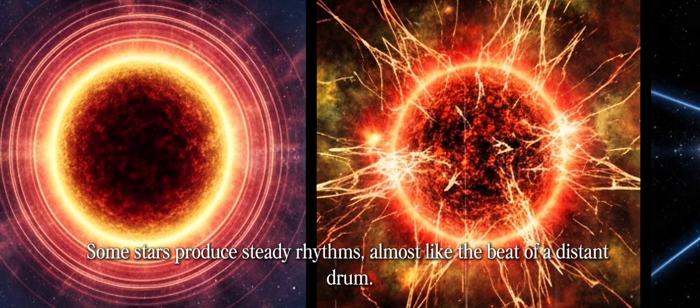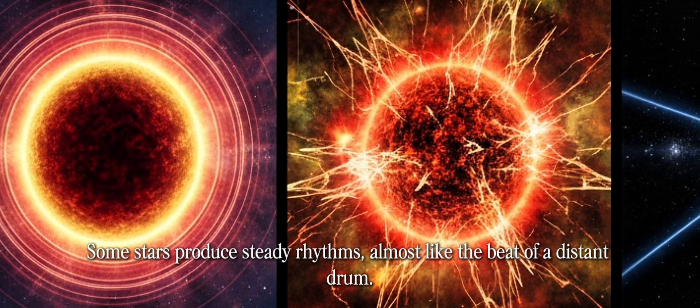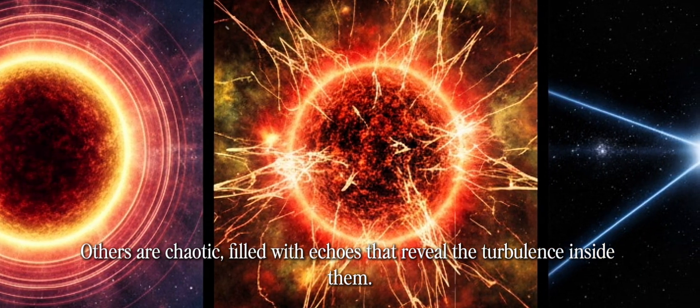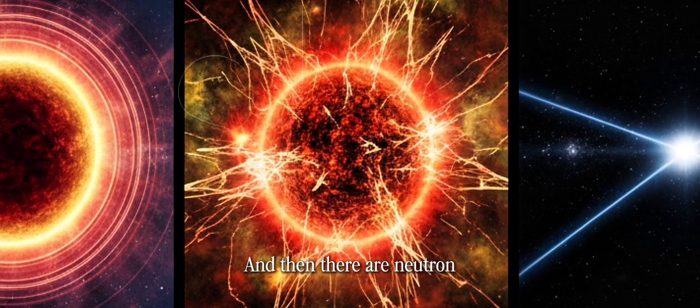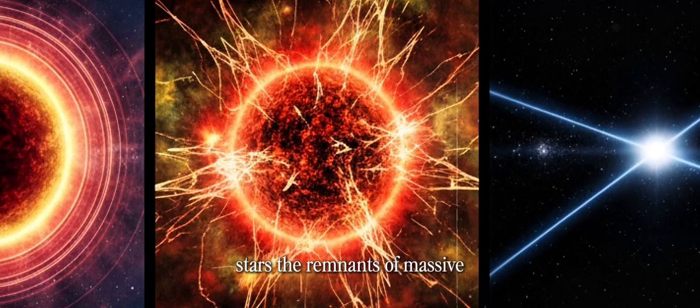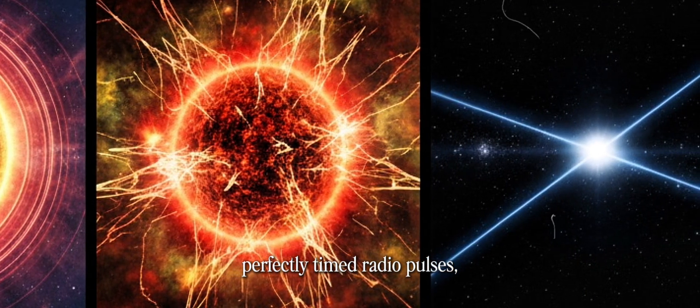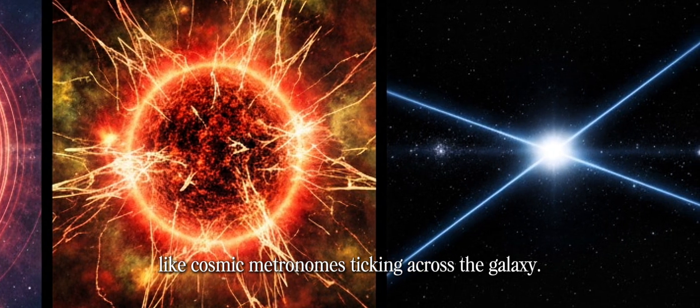Some stars produce steady rhythms, almost like the beat of a distant drum. Others are chaotic, filled with echoes that reveal the turbulence inside them. And then there are neutron stars, the remnants of massive supernovae sending out perfectly timed radio pulses, like cosmic metronomes ticking across the galaxy.